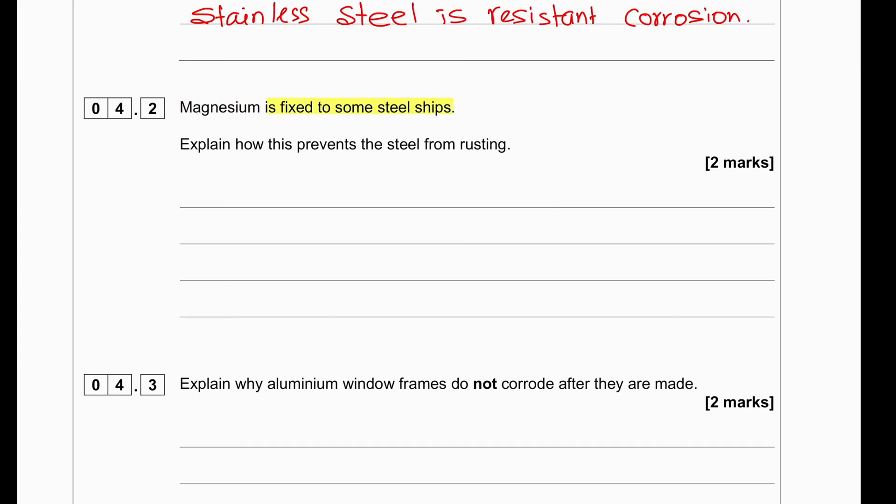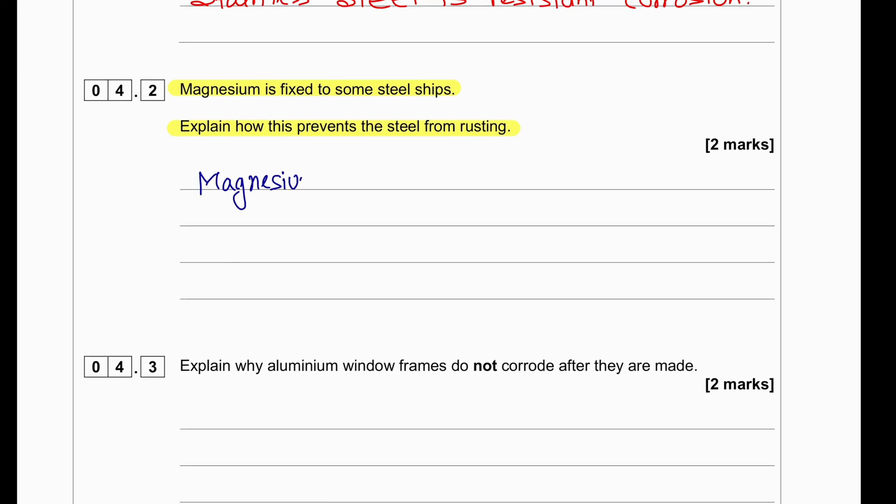Magnesium is fixed to some steel ships. Explain how this prevents the steel from rusting. Magnesium is more reactive than iron. So, it provides a sacrificial protection by reacting faster than the iron.